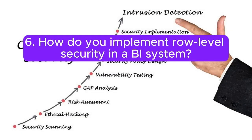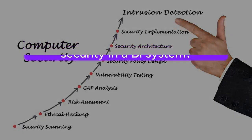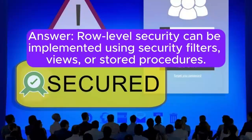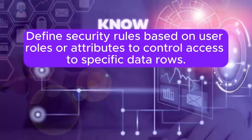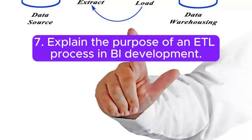Question 6: How do you implement row-level security in a BI system? Answer: Row-level security can be implemented using security filters, views, or stored procedures. Define security rules based on user roles or attributes to control access to specific data rows.